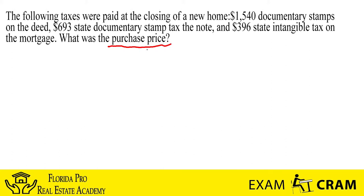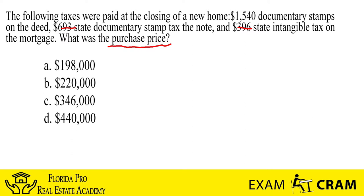So all these other two, you can kind of get rid of them — we don't really need to worry about those right now. Let's take a look at what answer options they're gonna give you. Answer A is $198,000, B is $220,000, C is $346,000, or D is $440,000.